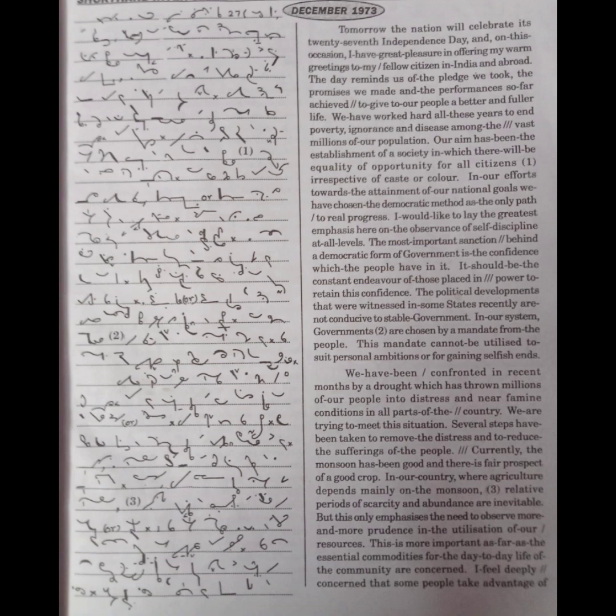I would like to lay the greatest emphasis here on the observance of self-discipline at all levels. The most important sanction behind a democratic form of government is the confidence which the people have in it. It should be the constant endeavor of those placed in power to retain this confidence. The political developments witnessed in some states recently are not conducive to stable government. In our system, governments are chosen by a mandate from the people. This mandate cannot be utilized to suit personal ambitions or for gaining selfish ends.